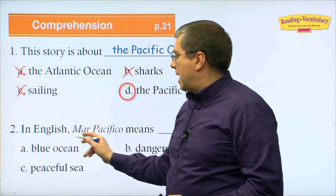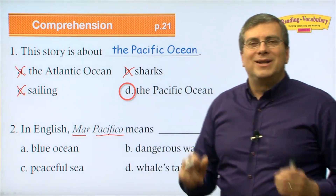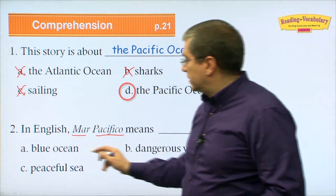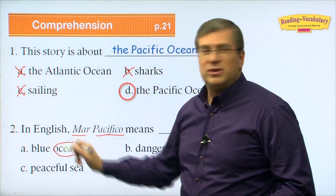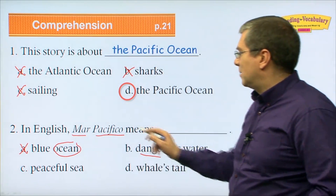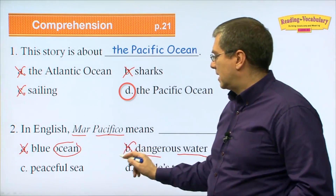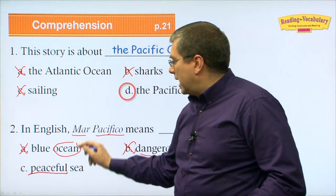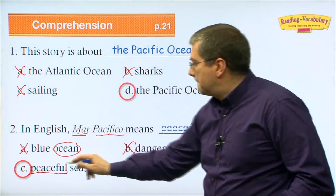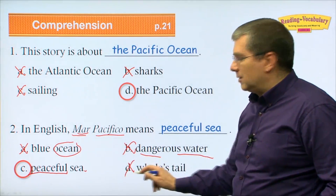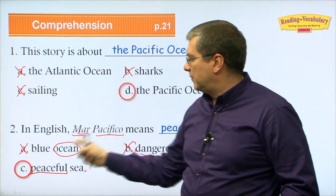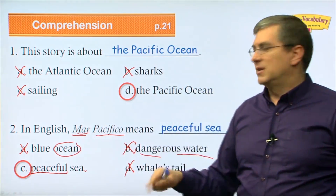Number two: In English, Mar Pacifico means what? Does it mean blue ocean? No — Pacifico does not mean blue. Dangerous water? No, it's the opposite. Mar Pacifico means peaceful sea. Pacifico means peaceful; Mar means sea or ocean. So Mar Pacifico is peaceful sea — not whale's tail, which was just a trick answer. Mar Pacifico means peaceful sea.